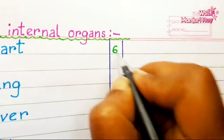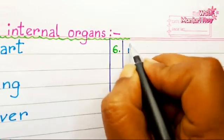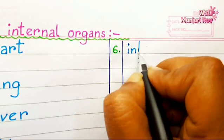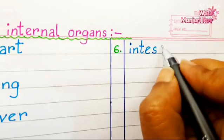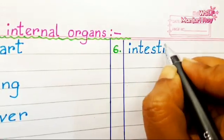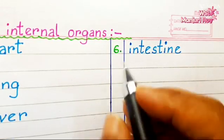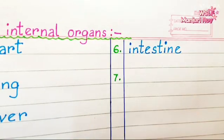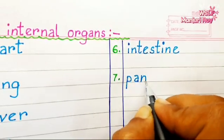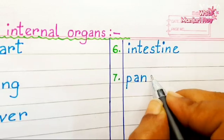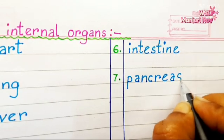Number 6: Intestine. I-N-T-E-S-T-I-N-E. Intestine. Number 7: Pancreas. P-A-N-C-R-E-A-S. Pancreas.